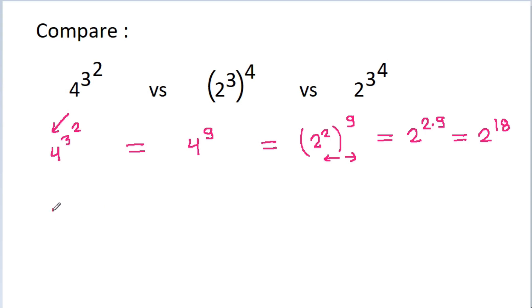The second expression is (2^3)^4. We have brackets, so we multiply the powers. It will be equal to 2^(3×4), which is 2^12.